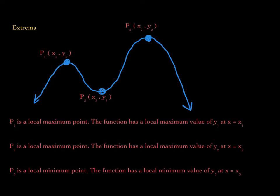It's very important to understand that while a local maximum point is an ordered pair, the local maximum value is a real number — it is simply the y value, y sub 1. Similarly, another local maximum point has local maximum value y sub 2, and the local minimum point is the ordered pair (x sub 3, y sub 3), but the local minimum value is simply y sub 3. A local maximum or minimum point is an ordered pair, but a local maximum or minimum value is the y value.